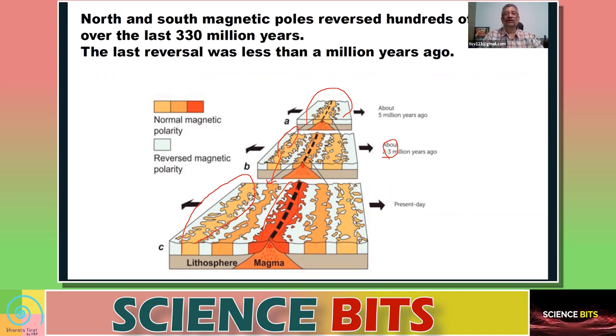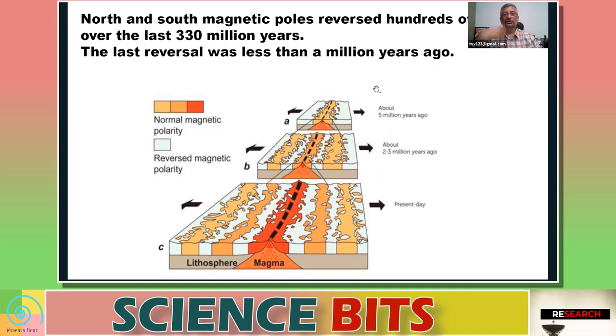These rocks will have, let's say, iron and such material, ferro material. And if I look at the alignment of these materials I will be able to find out what was the polarity in those times. Looking at that kind of data we are able to guess that the polarity of earth changed many times in the past.